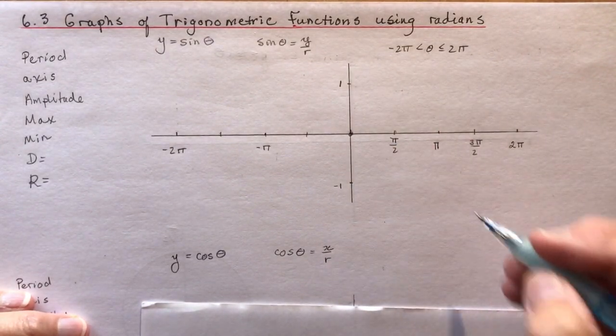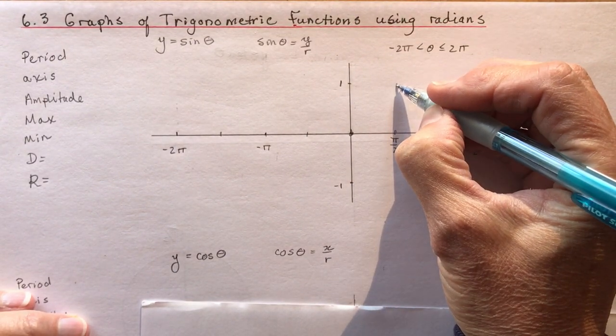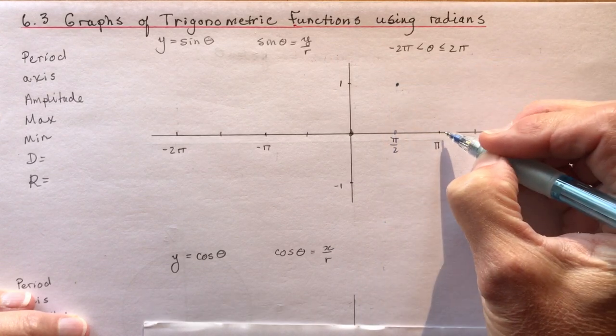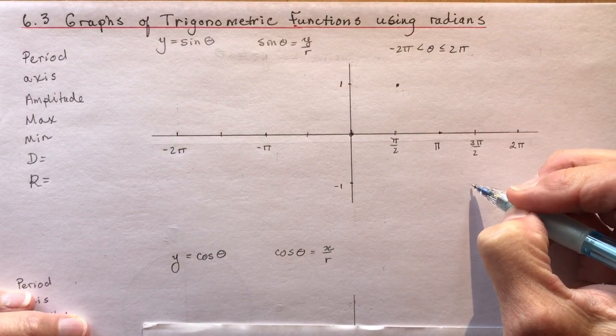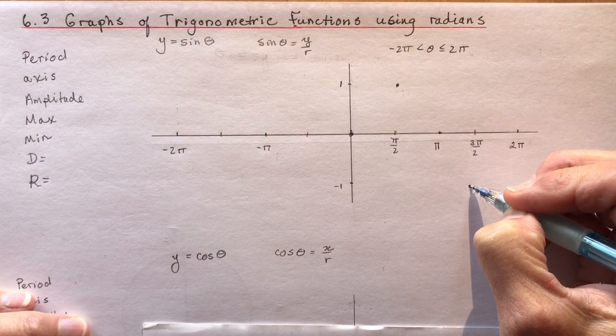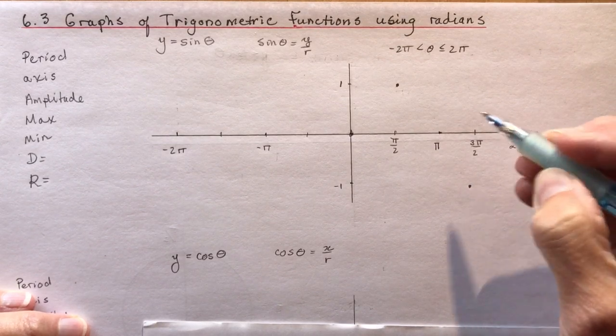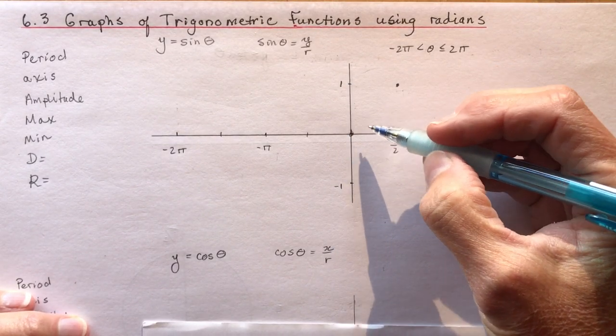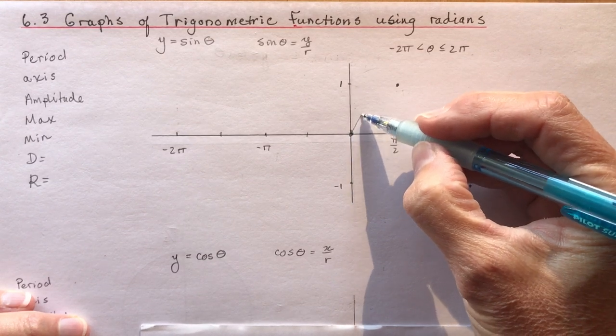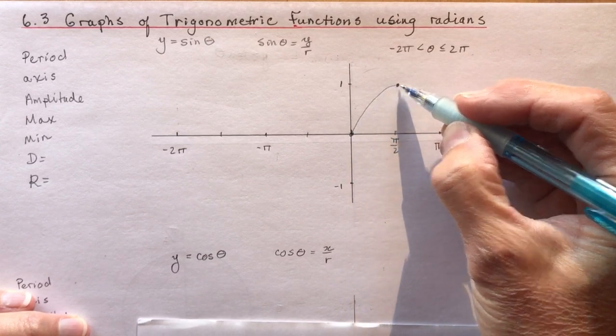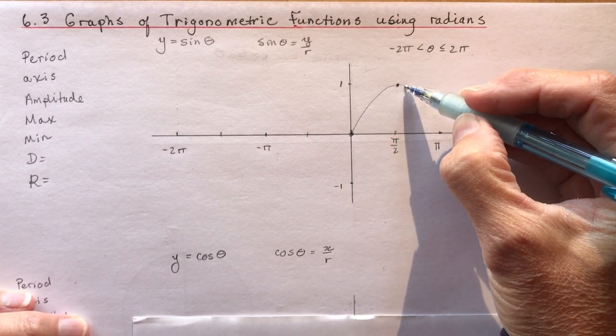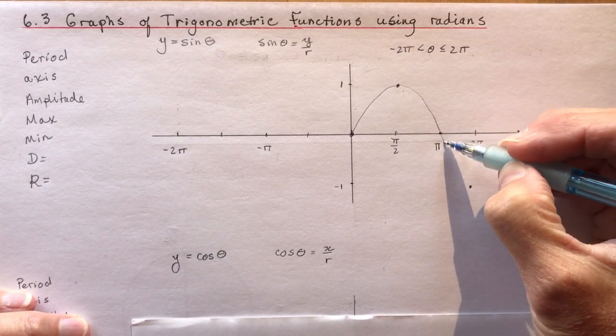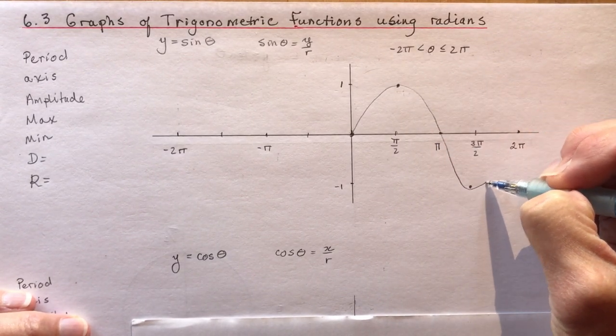Okay so we have 0 here. Pi over 2 is 1. And if you're ever writing a test and you don't remember where to go, just remember that you can ask your calculator. Some kids had trouble knowing where to start it. You can put in sine of 0 and you will get 0 and the sine of 90 degrees if you can't remember the radians.